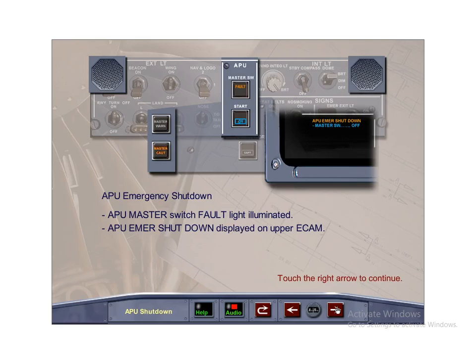APU emergency shutdown occurs when the APU shut-off push-button on the interphone panel or the APU fire push-button switch on the overhead panel is pressed. A single chime sounds, the APU master switch fault light and master caution lights illuminate. The ECAM message APU emergency shutdown is also displayed on the upper ECAM unless the battery is the only power source available, in which case the cockpit goes dark. APU shutdown due to fire is covered in the fire protection module.